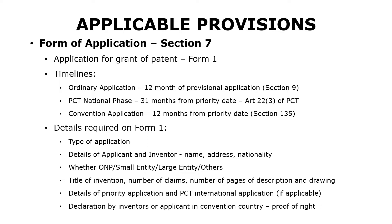Before going into the details required under Form 1, let us see the timelines applicable for the three types of applications. For the ordinary application, you need to file a complete specification within 12 months of filing a provisional application, as provided under Section 9. If you are filing a complete specification directly, there is no timeline. For a PCT national phase application, the timeline for filing is 31 months from the priority date, provided under Article 22(3) of PCT regulations. For convention applications, Section 135 provides that the convention application needs to be filed within 12 months from the priority date.